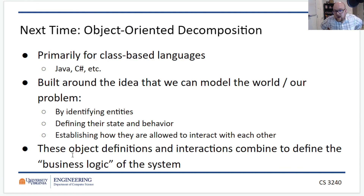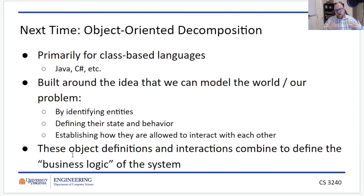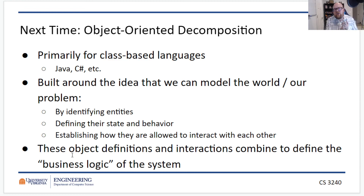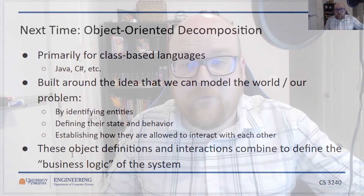Next time we'll look at object-oriented decomposition. This video is under 15 minutes, including the cat incident. Object-oriented decomposition is primarily for class-based languages like Java, C#, and Python used as a class language. It's built around identifying entities — the actors within the system — what state they need to keep track of, what behaviors they support, and how all these entities interact. That's all for this time — take a look at structure charts online for more examples, and we'll see you next time for object-oriented decomposition.